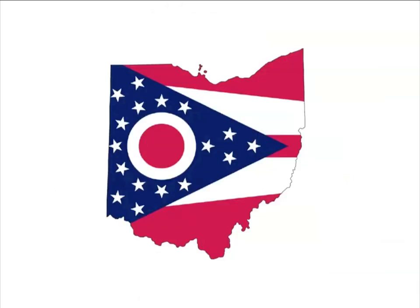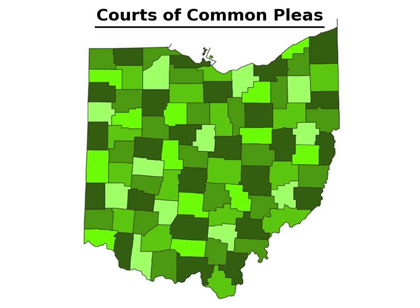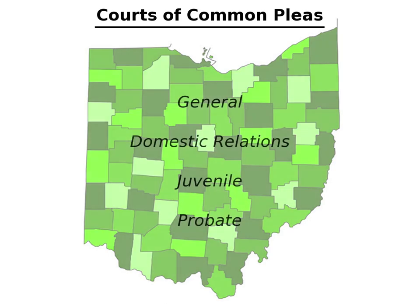In the state court system, cases begin at the trial court level. The courts of common pleas are the trial courts of general jurisdiction. There are 88 courts of common pleas in the state, one in each county. These courts may be divided into four divisions: a general division, domestic relations division, juvenile division, and probate division.